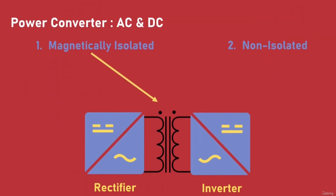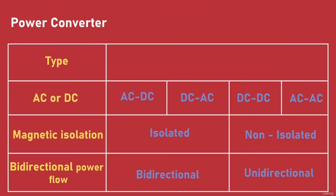A third way to classify converters is based on whether there is transformer isolation between input and output. Isolation in power converters is primarily required for safety reasons. For example, all mobile phone chargers are isolated so that the 5-volt low-voltage output is safe to touch even though the input is from 110-volt or 230-volt AC. The transformer used for galvanic isolation can have a different turns ratio between input and output, which can help in stepping up or stepping down the voltage.